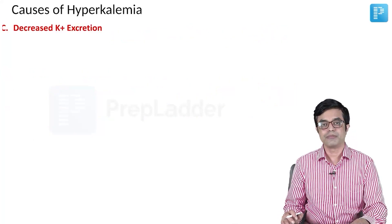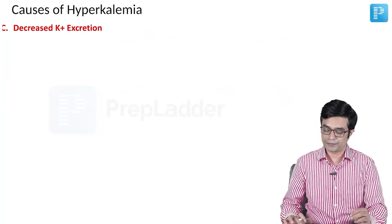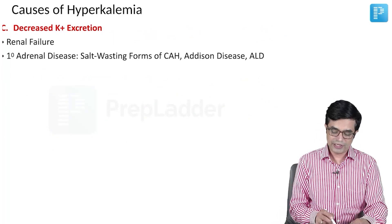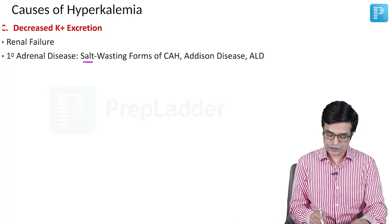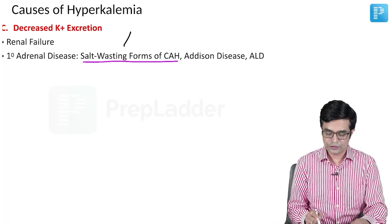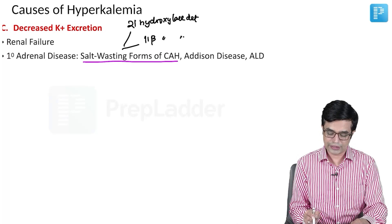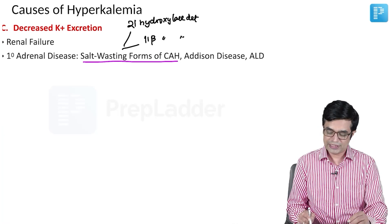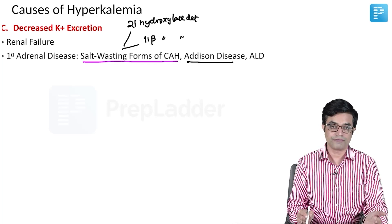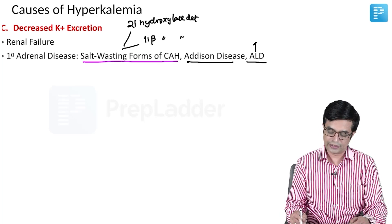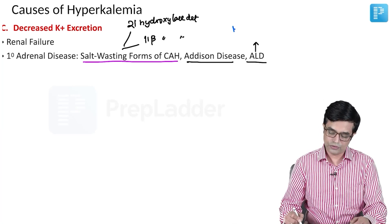The third category is decreased potassium excretion — potassium is not getting excreted out of the body. This will be seen in all varieties of renal failure. It will occur in primary adrenal diseases like salt-losing forms of CAH: 21-hydroxylase deficiency and 11-beta-hydroxylase deficiency — both will have hyperkalemia. It can be seen in Addison's disease where there is deficiency of adrenal cortical hormones, and in ALD — adrenoleukodystrophy.